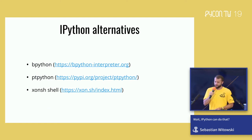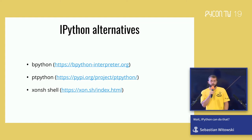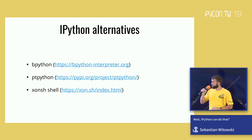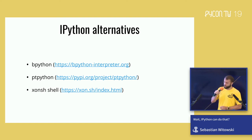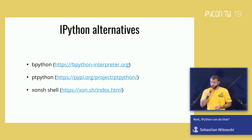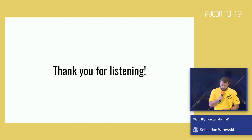Since this is already a talk about a Python REPL replacement, it wouldn't be fair not to at least mention the alternatives. There are three main ones: bpython, ptpython, and conch shell. bpython and ptpython are much more lightweight than IPython and have fewer features — if you're looking for a REPL that fits between the standard Python REPL and IPython, check them out. Conch is quite different — it's not actually a REPL, it's a shell. It adds Python on top of Bash so you can use both, which is an interesting project if you want to use Python directly in your shell. And that's all I have for you today — thank you for listening.